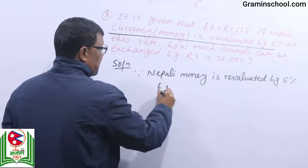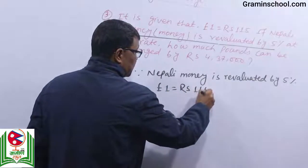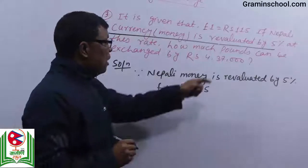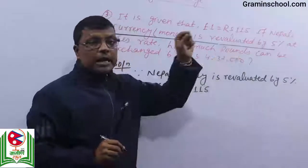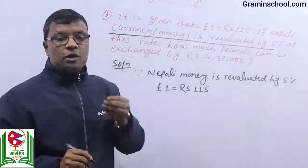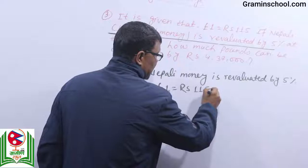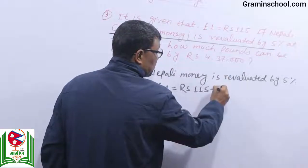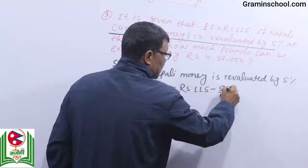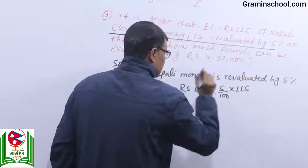One pound is equal to Rs. 115. This is re-evaluated. Re-evaluation means Nepali price is less. How much less? 5%. So: 5 by 100 into 115.